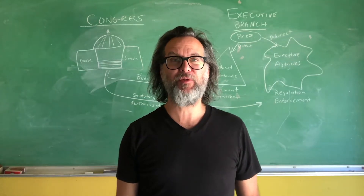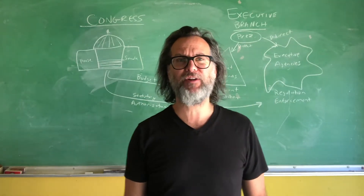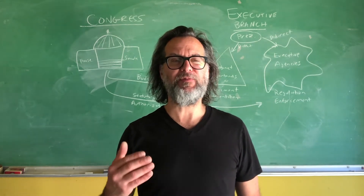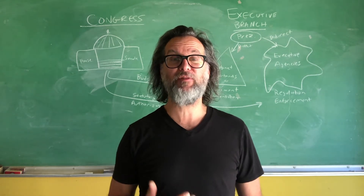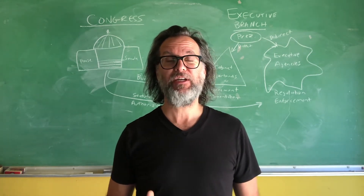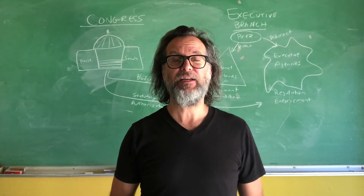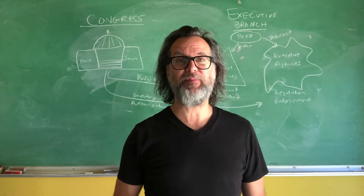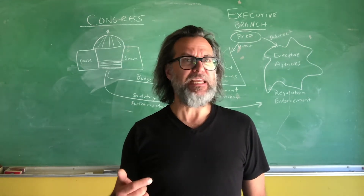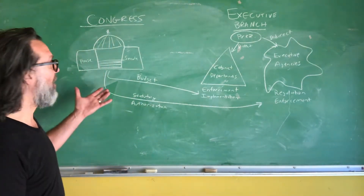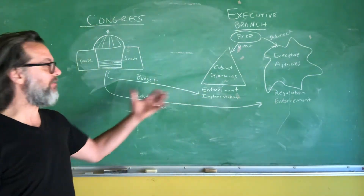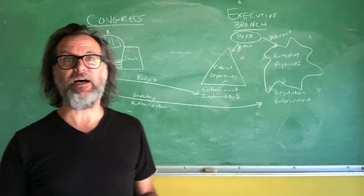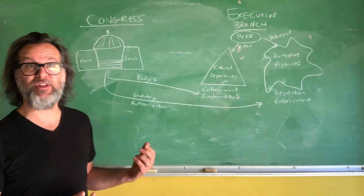For this final lecture of module three, I'm going to pick up on a theme I started developing in the previous lecture on economic policy and explain why the current relationship between Congress and the executive branch, especially on economic policy, exists, where it came from, the driving dynamics for it, and what we can expect from the future. The diagram behind me shows Congress and the executive branch and a couple of connections between them — not the only connections, but the two that are relevant for economic policy.